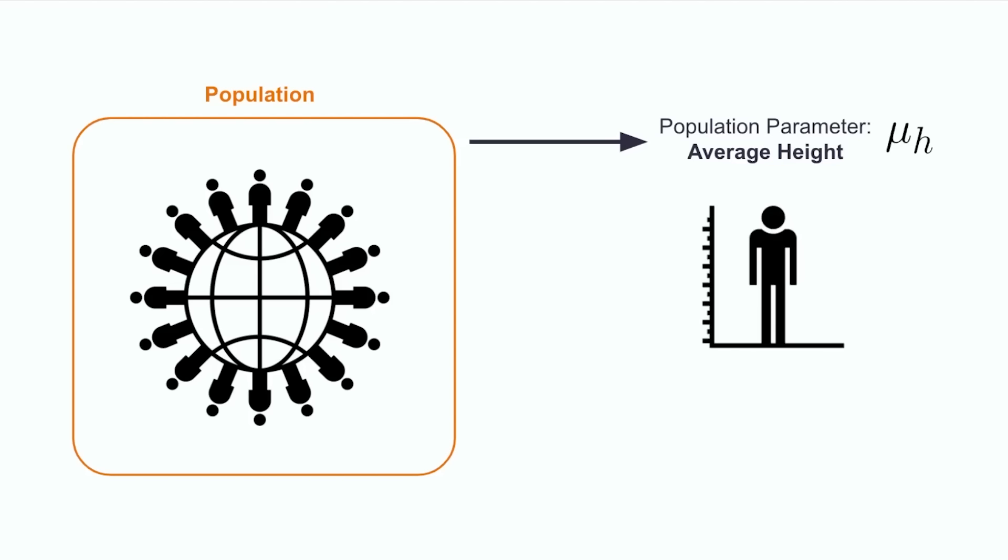Now, the most accurate way to measure the average height of the population would be to measure the height of every single person, add those heights up, and divide by the population size. This would give us the population parameter for the average height, which we write as mu h. This, however, is not practical for the entire Earth.